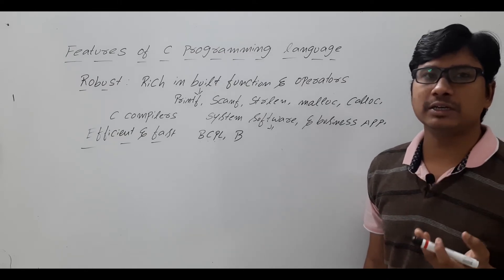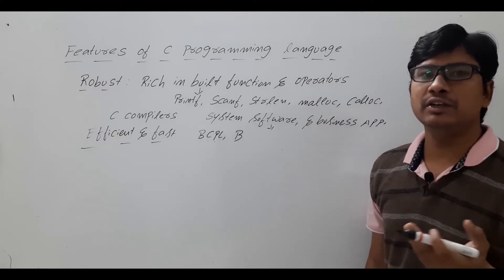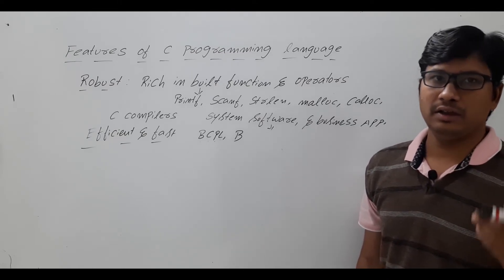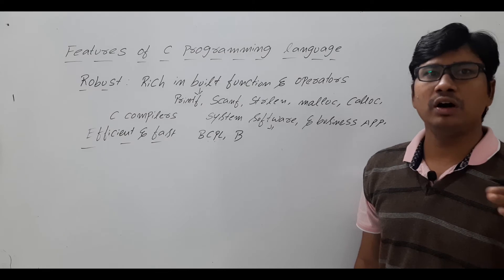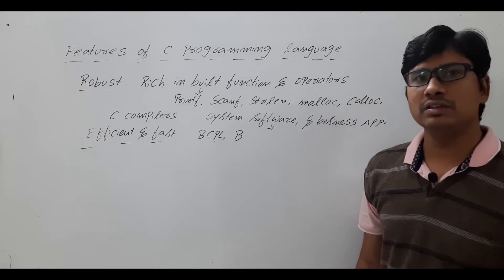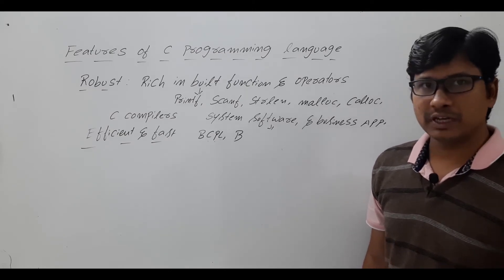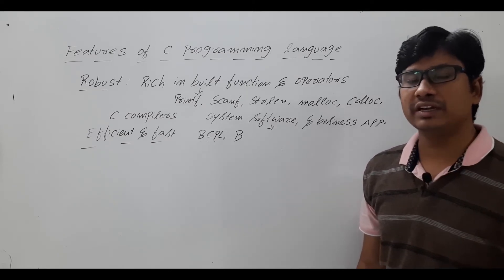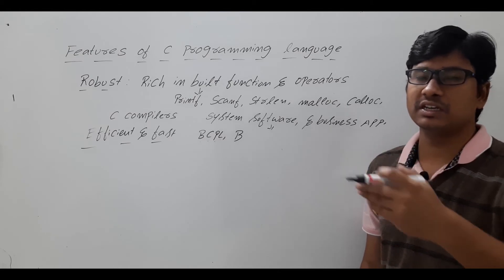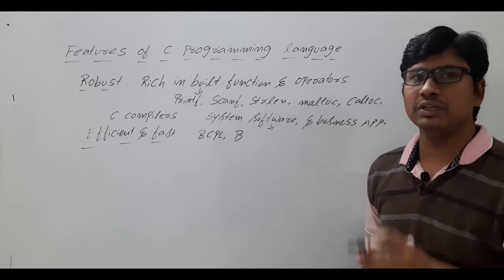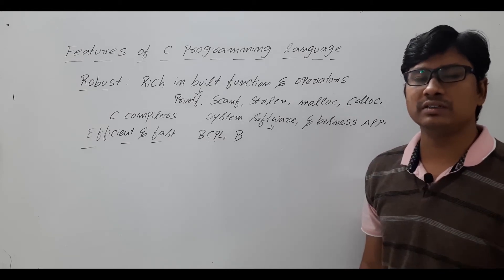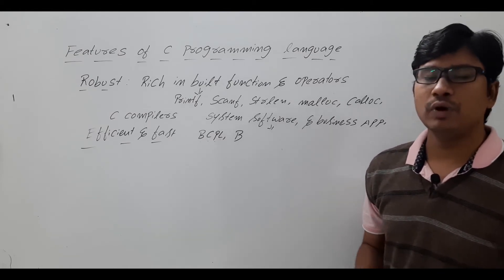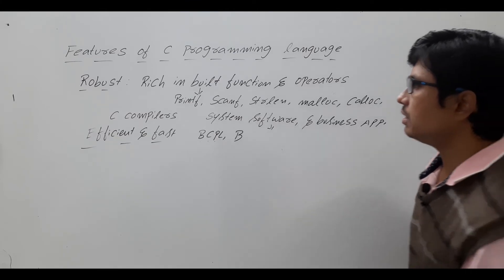C has various data types such as int, float, char, long double, and even user-defined data types such as structures, unions, and pointers. We will discuss all these things one by one in the coming videos.